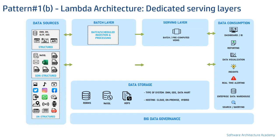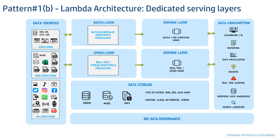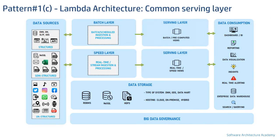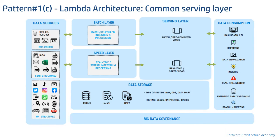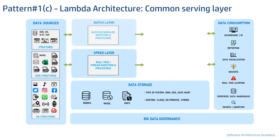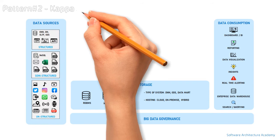The second variant of Lambda is what we are calling dedicated serving layers. Here, just like the serving layer for batch, there is a dedicated serving layer for the speed layer as well. The final Lambda pattern variant combines both the serving layers of batch and speed into one common layer which caters to the consumption layer.